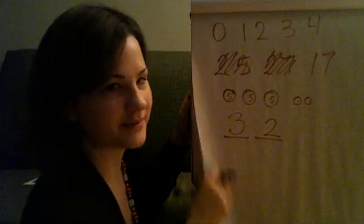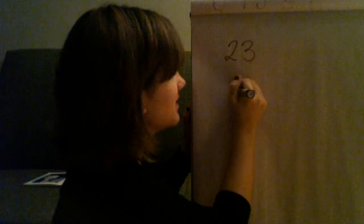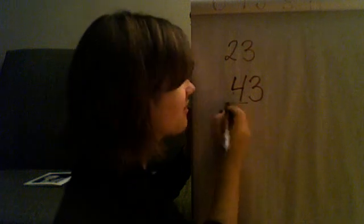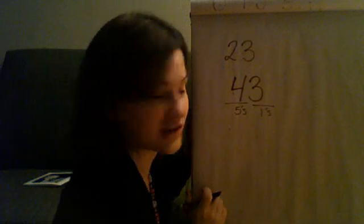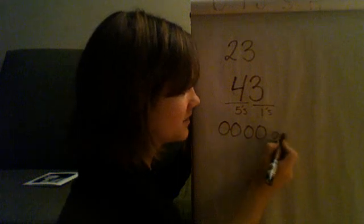Now you try one by yourself: convert 23 to base 5. Remember to count it out in fives. The answer is 4-3. That means there are four groups of five and three ones. Let's check: 5, 10, 15, 20 — that's four fives — and then 21, 22, 23 — three ones. Four fives and three ones equals 23.